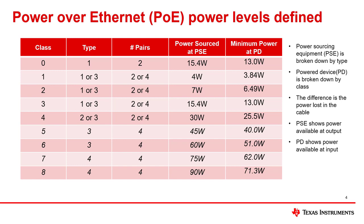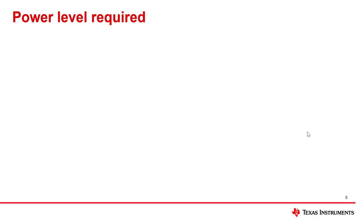It is important to understand that for a powered device, the power commonly talked about is the power available at the RJ45 port — that is the input power. These are the power levels defined within PoE, and I want to be clear: this is not the power level that is available to the load. The first step is to discover how much power the load needs. This includes an MCU, it could include a motor, an antenna — anything that the device is going to be powering needs to be factored in and added together.